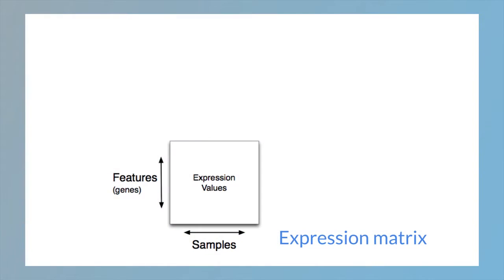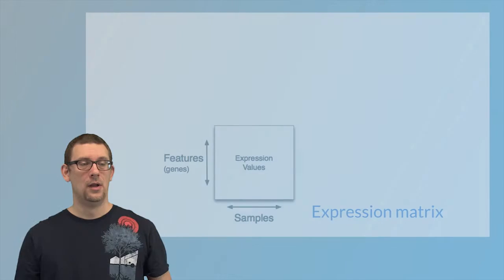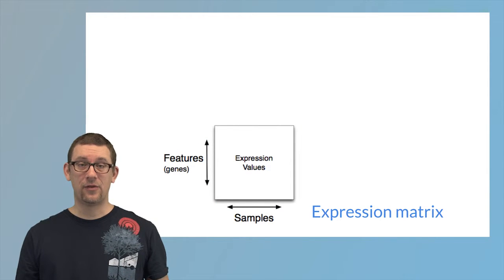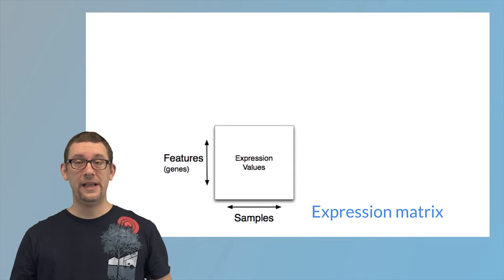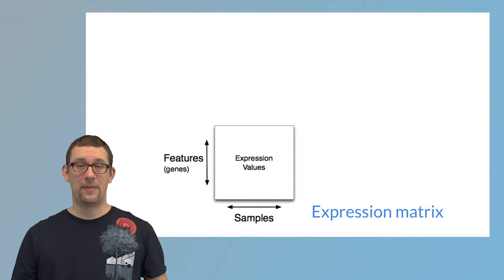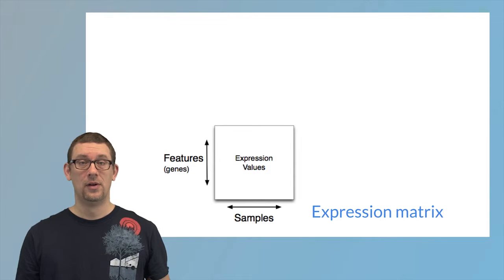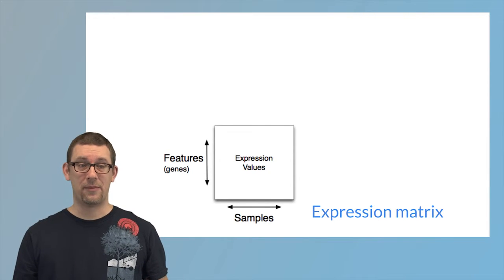In an expression set, the first component we have is an expression matrix. This is a matrix of actual measured expression values. In Bioconductor, we follow the same convention as we do in most of computational biology, where these type of matrices have samples on the columns and features on the rows. Features are genes or probes. And this matrix is a single matrix of numeric values. Each entry in the matrix tells you something about how that particular gene or feature was expressed in that particular sample.